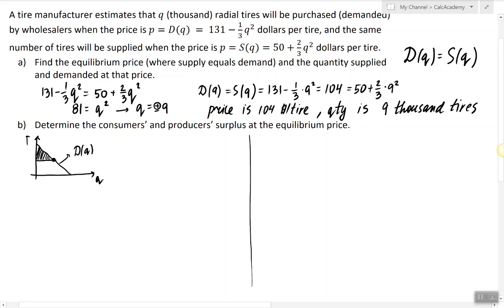This is q. This is price. And this is just some point q0, p0. So the formula to find consumer surplus is the integral from 0 to q0 of D(q) dq minus the area of this rectangle which is p0 times q0.